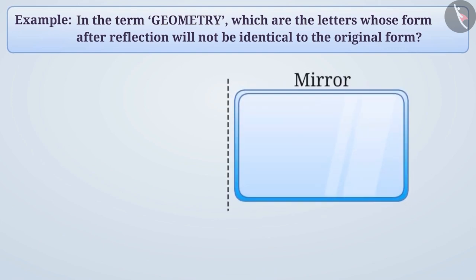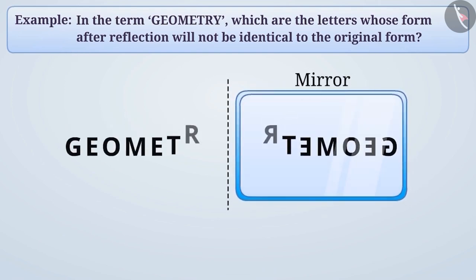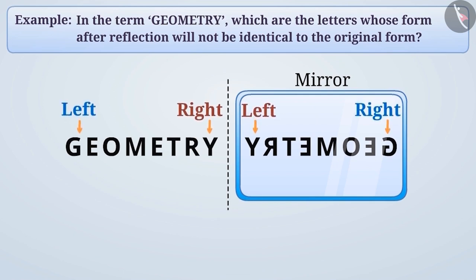Imagine we place the word geometry in front of a mirror. In such a case, we see the right part appears to the left and the left part appears to the right. This is what we call lateral inversion.